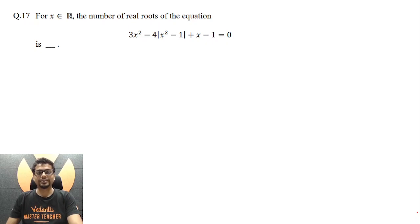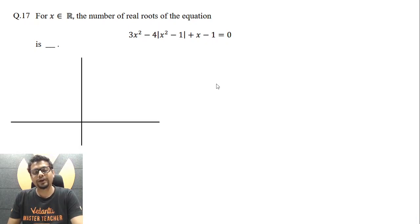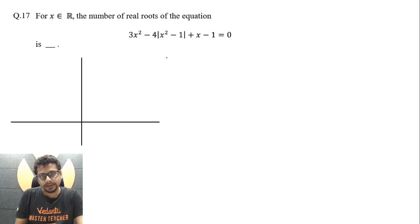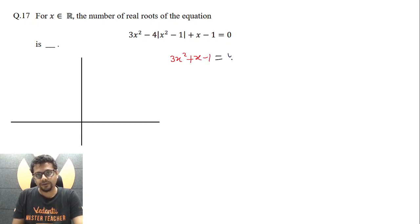For x being real, the number of real roots of the given equation. A quick way to find the number of real roots is by plotting curves. Consider 3x² + x - 1 = 4 × |x² - 1|.